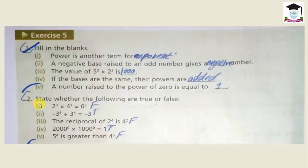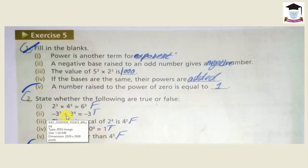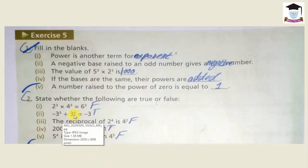Now question number 2: state whether the following are true or false. First statement: 2 power 3 multiplied by 4 power 3 equals 6 power 3. This statement is false because when we simplify it the result is not 6 power 3. Second: minus 3 power 5 divided by 3 power 4 equals minus 3. When we simplify, dividing minus 3 power 5 by 3 power 4 gives minus 3, so this is true.